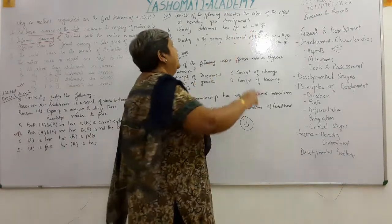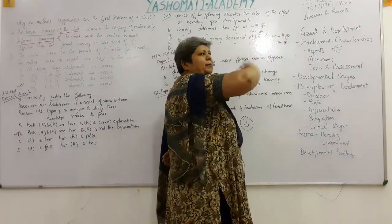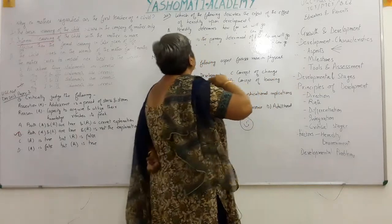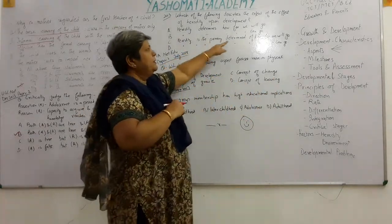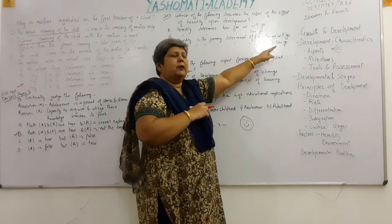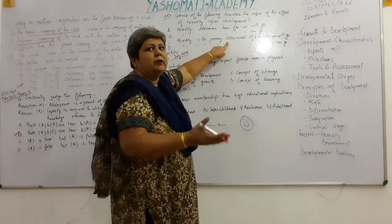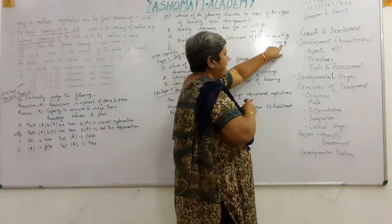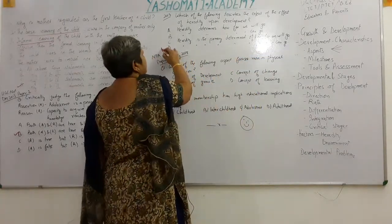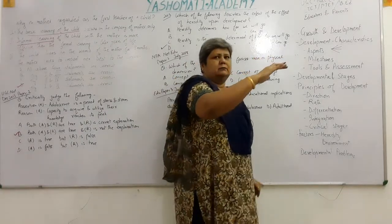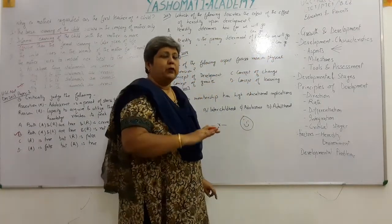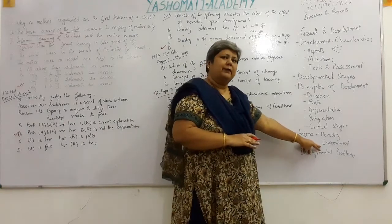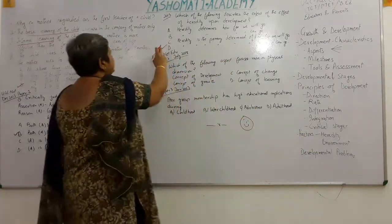There is a difference between 'will go' and 'can go.' 'Will go' means it will definitely reach that level regardless. 'Can go' means it is the maximum level — it may remain below that too. Heredity is the primary determinant of how far we can go, setting the limit. The other determinant is environment. So D is the correct option.